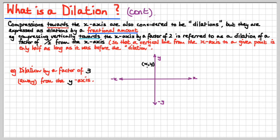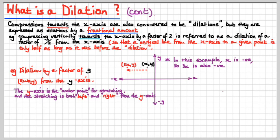A dilation of a factor of 3 away from the y-axis — we're going away from the y-axis now. If x is negative, then 3x is also negative. The y-axis is the anchor point for stretching, and the stretching is both left and right of the y-axis. If a point is to the right of the y-axis, it gets stretched to the right; if it's to the left, it gets stretched to the left. The y-axis is the anchor man.